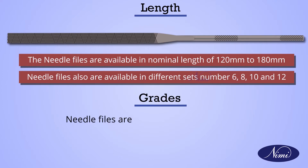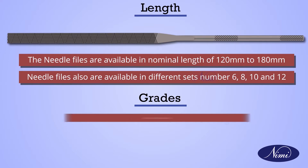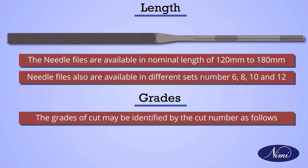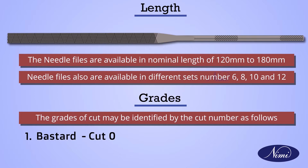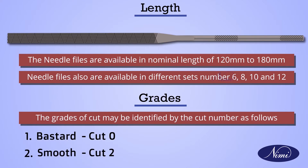Needle files are available in different grades. The grades of cut may be identified by the cut number as follows: Number 1 — bastard cut 0; Number 2 — smooth cut 2.